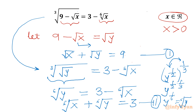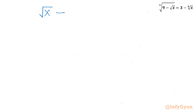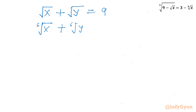So our new system of equations is: equation 1 — square root x plus square root y equal to 9, and equation 2 — 6th root x plus 6th root y equal to 3.